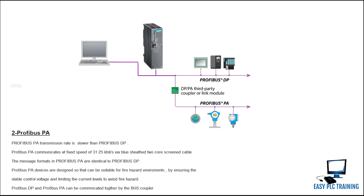PROFIBUS PA devices are designed to be suitable for fire hazard environments by ensuring stable control voltage and limiting the current levels to avoid fire hazards. PROFIBUS DP and PROFIBUS PA can communicate together by using a bus coupler.